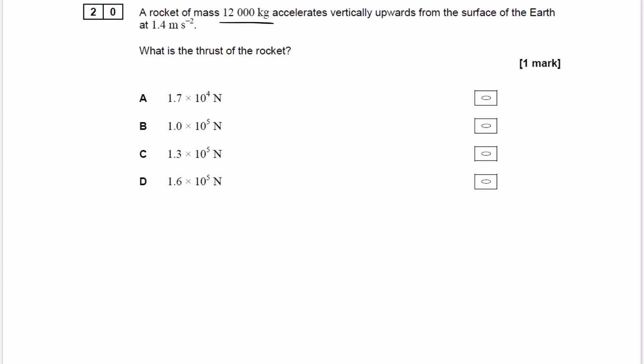We have a rocket of mass 12,000 kilograms that accelerates vertically upwards from the surface of the Earth with a value of 1.4 meters per second squared. So we're trying to work out the thrust in the rocket.